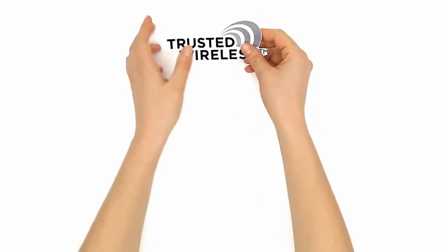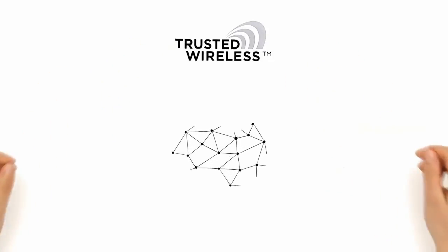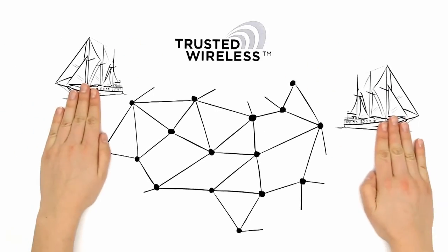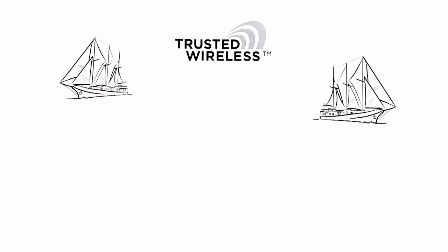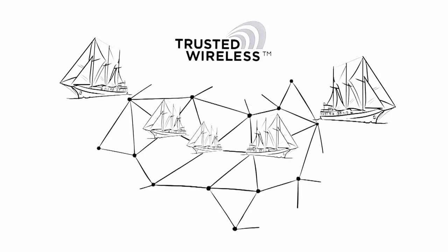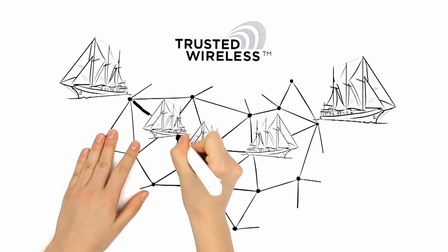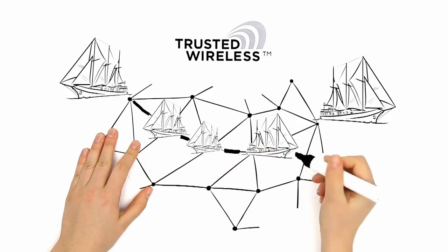Trusted wireless is also a flexible self-healing network. Let's say the two ships are too far apart to reach each other. The solution? They use closer ships, other network members, as repeaters. That's how the signal transmission works in a self-healing network.